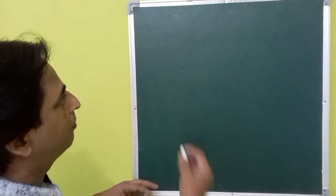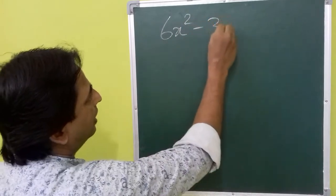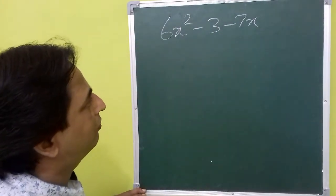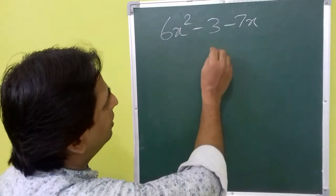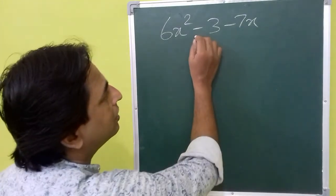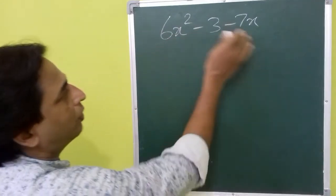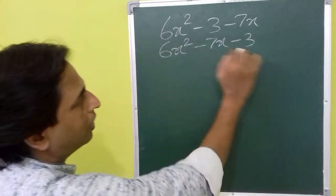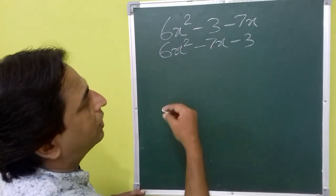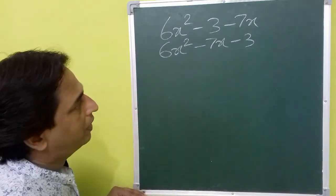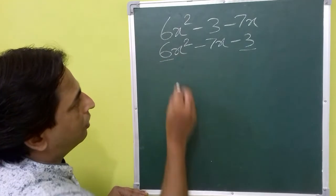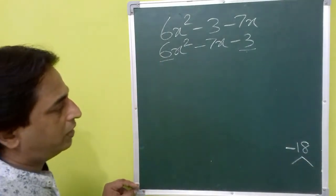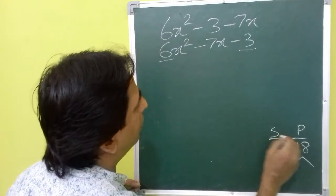We will use one more example. Suppose 6x squared minus 3 minus 7x is the polynomial. We need to find the zeros and verify the relationship between the zeros and the coefficients. First we write it in proper descending order: 6x squared minus 7x minus 3. Now we apply splitting the middle term. The first step is constant term multiplied by the coefficient of x squared: minus 3 times 6 is minus 18. We need two factors whose sum equals minus 7.